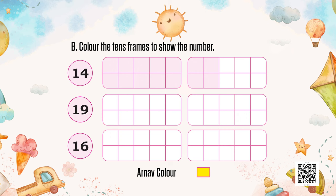Now we again have the same tens frame. But this time we are not going to use buttons — instead, we are going to colour them. Arnav has chosen yellow. Before Arnav fills up the boxes, let us look at the example given. Number 14: we colour 10 boxes in the first frame and 4 boxes in the second frame, representing the number 14.